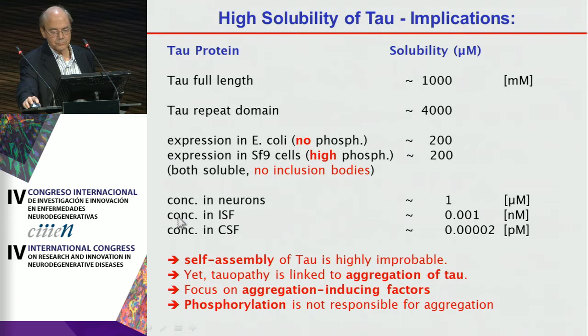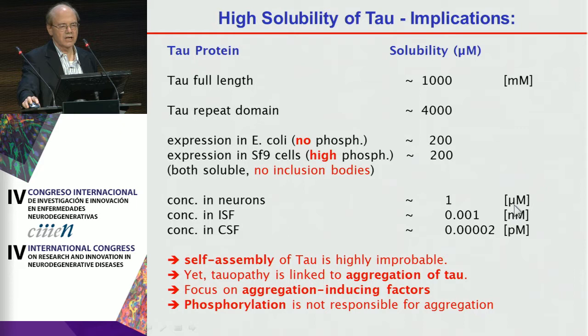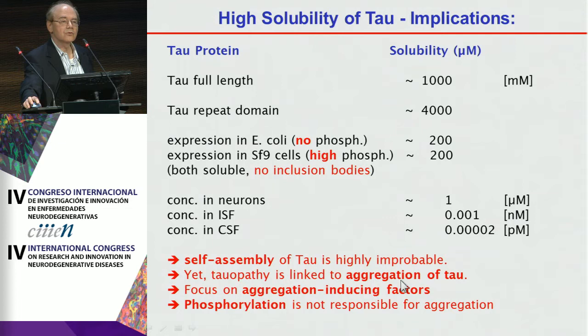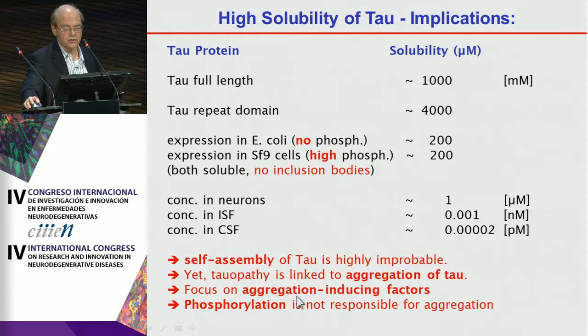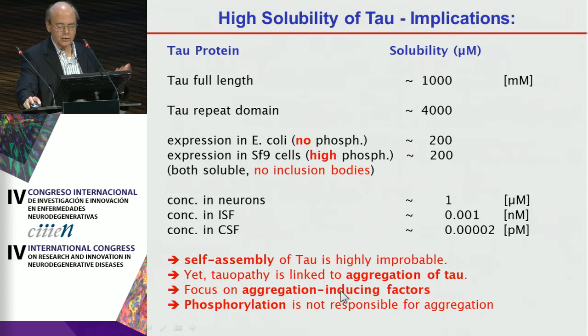Tau in interstitial fluid is about 1 nanomolar, and in CSF it is picomolar — very low concentrations. All this tau is not aggregated unless complexed with something else. Self-assembly of tau by itself is highly improbable. Nevertheless, tauopathy is linked to tau aggregation in most cases, so we must focus on aggregation-inducing factors. The conclusion is also that phosphorylation alone is unlikely to be responsible for aggregation — certain phosphorylation sites may play a role, but we don't know which ones.